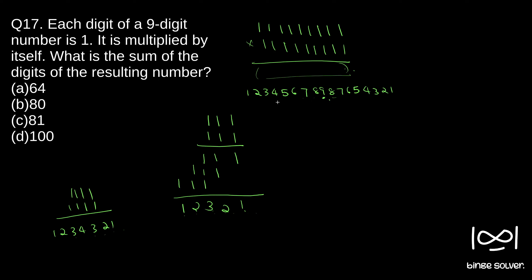Now we just have to add all the digits. We don't have to manually add each one. If you look at this result, it has two symmetric parts: 1 to 8 appearing twice, plus the 9 in the middle. We can use the sum formula: (first + last) × n/2.